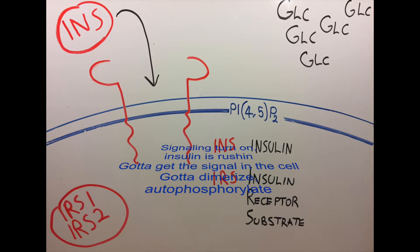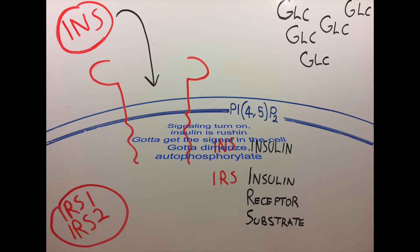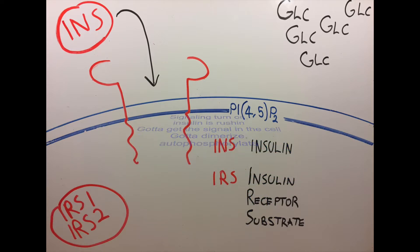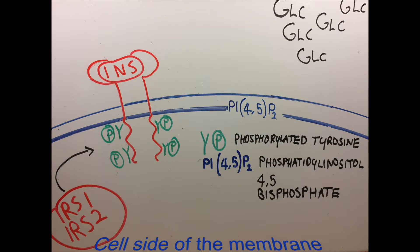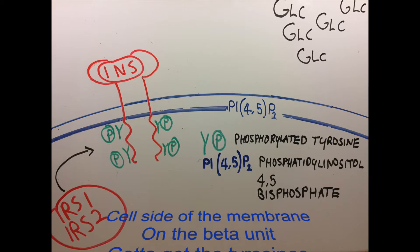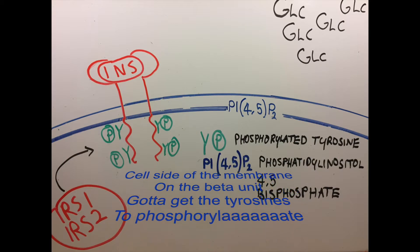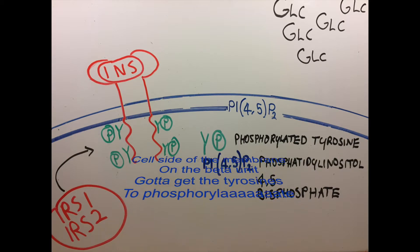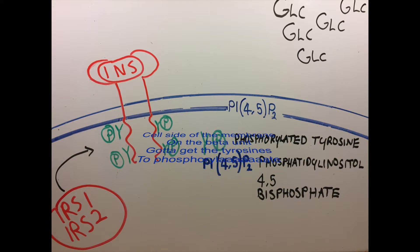Gotta dimerize, autophosphorylate — cell side of the membrane, on the beta unit. Gotta get the tyrosines to phosphorylate.